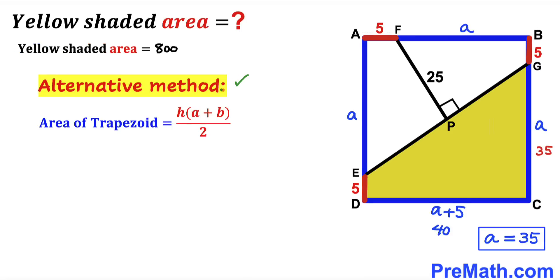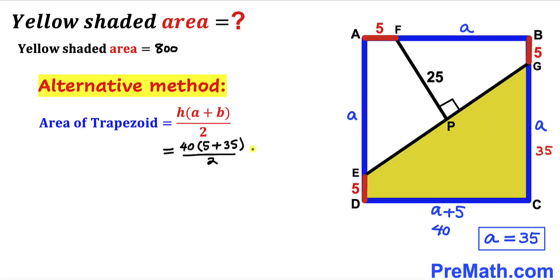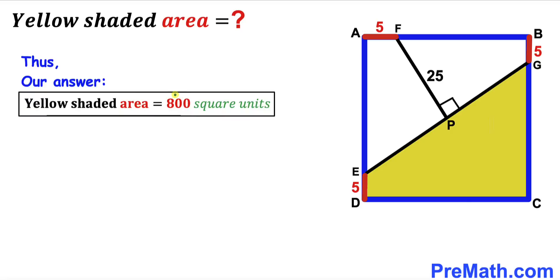Now let me show you the alternative method to calculate the area of this yellow shaded trapezoid using the area of a trapezoid formula. In our case, the height h is 40, side a is 5, and side b is 35. Substituting all those values and simplifying the right-hand side, the area of this yellow shaded region turns out to be 800 square units as well.